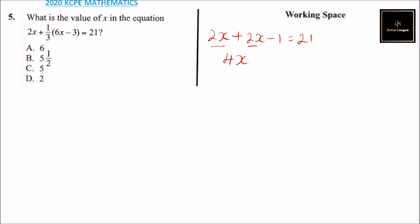Then we take one to the other side, or we add one to both sides. When you add minus 1 plus 1, that will give you 0, equals 21 plus 1, that will give you 22. Then you can divide both sides by 4.